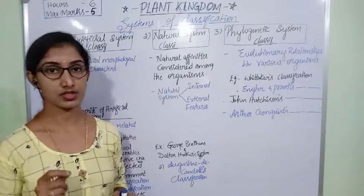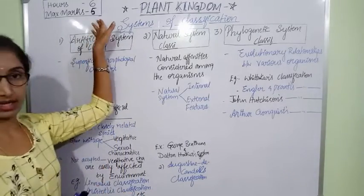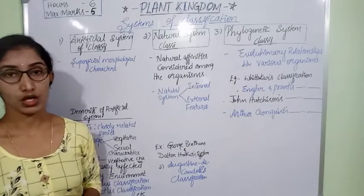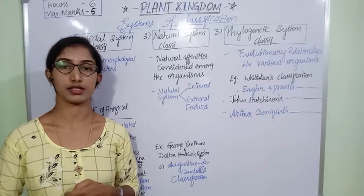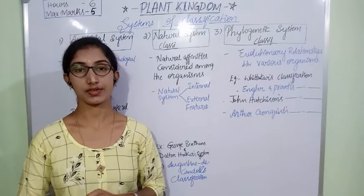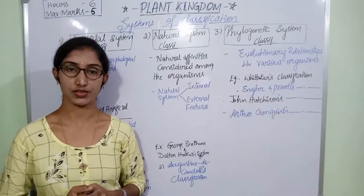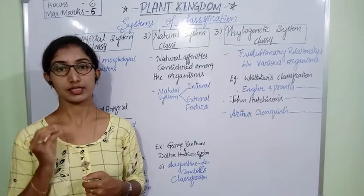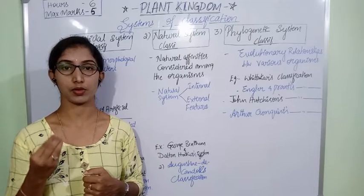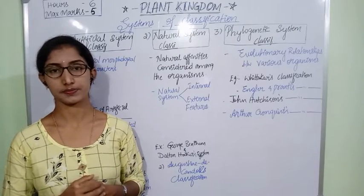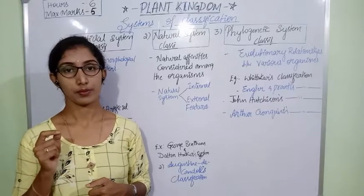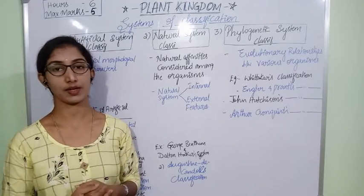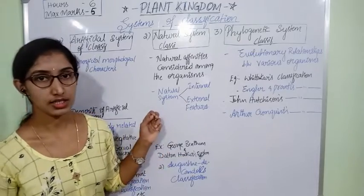In this chapter on Plant Kingdom, we can expect a maximum of five marks in the examination. Many biologists started classification and gave their classifications — like artificial classification, natural classification, and the final phylogenetic classification. Among all these, organisms were classified based on characteristic features or evolutionary relationships. Many classifications were rejected and only a few were accepted. We shall see which classification we follow today.